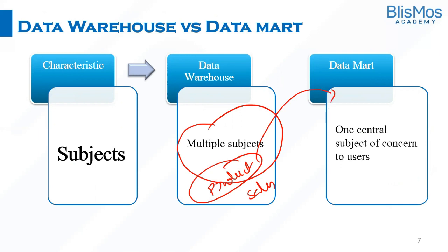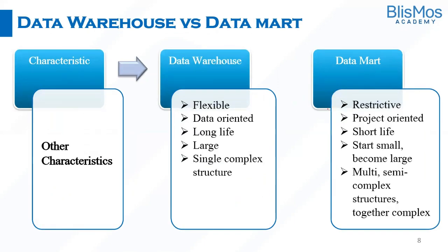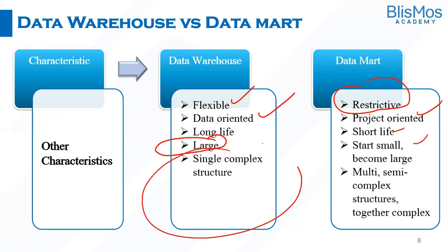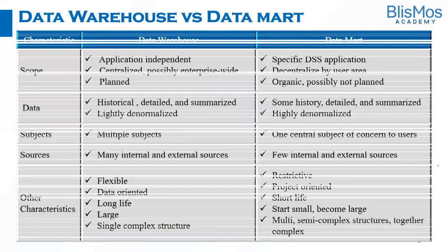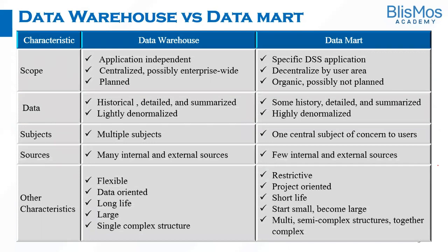How about other characteristics? The data warehouse is flexible — we can store any kind of data. The data mart, since it is pertinent to only one subject, is restrictive. It is data oriented and project oriented. Data warehouses, once created, last for 10 to 20 years, but a data mart will have a shorter life. The data warehouse is large and a single monolithic complex structure; on the other hand, data marts are multiple structures and may collectively become complex. We understood the different differences of data warehouse and data mart. Thank you.